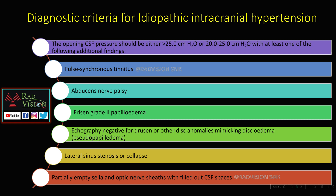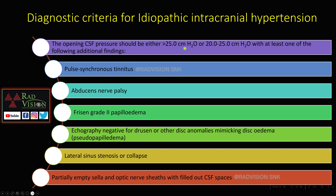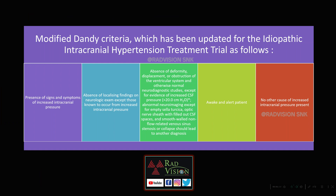These are the diagnostic criteria. The opening CSF pressure should be greater than 25 cm H2O, or if it is between 20–25 cm H2O, there should be at least one of the following additional findings: pulse-synchronous tinnitus, abducens nerve palsy, Frisen grade II papilledema, echography negative for drusen or other disc anomalies, lateral sinus stenosis or collapse, partial empty sella, or optic nerve sheaths with filled-out CSF spaces.